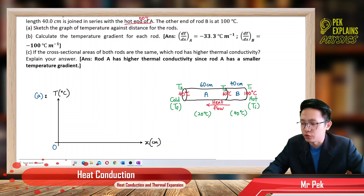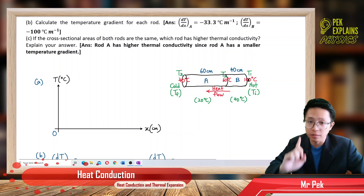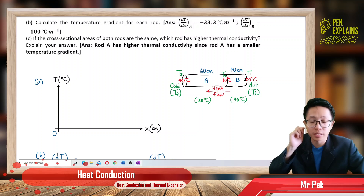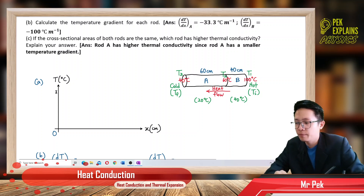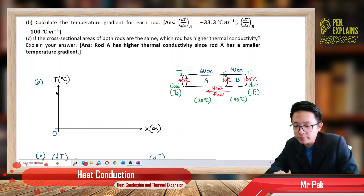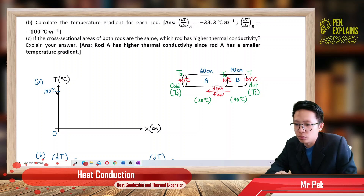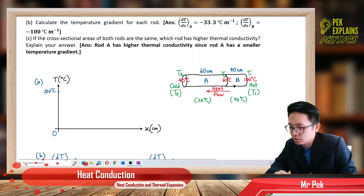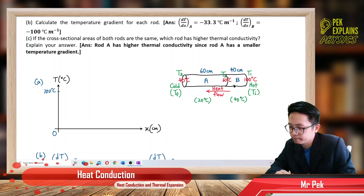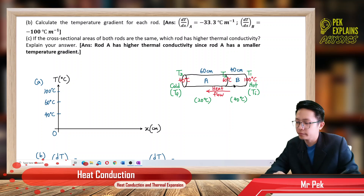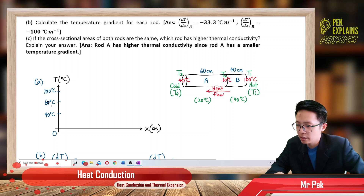On the temperature axis, we mark 100 at the top, then 60, and 40 near the bottom. We need to note the difference in temperature: between 100 and 60, the change is 40 degrees; between 60 and 40, the difference is only 20 degrees. So the spacing between 100 and 60 on the graph must be greater than the spacing between 60 and 40.